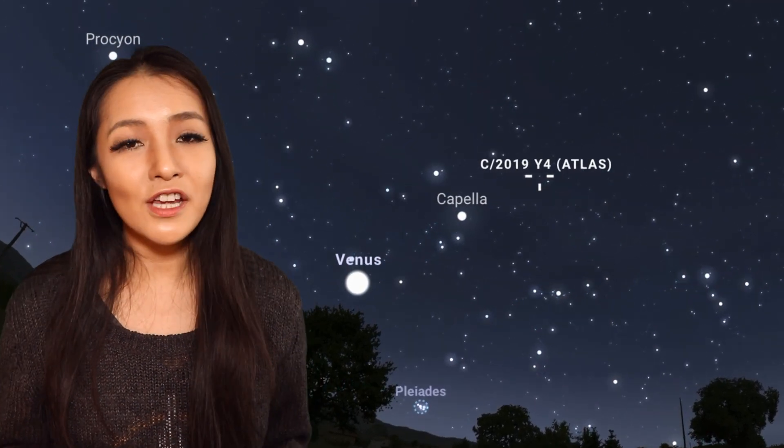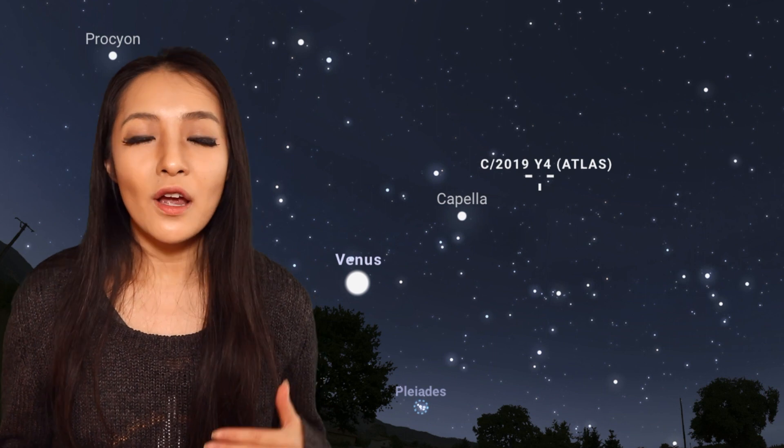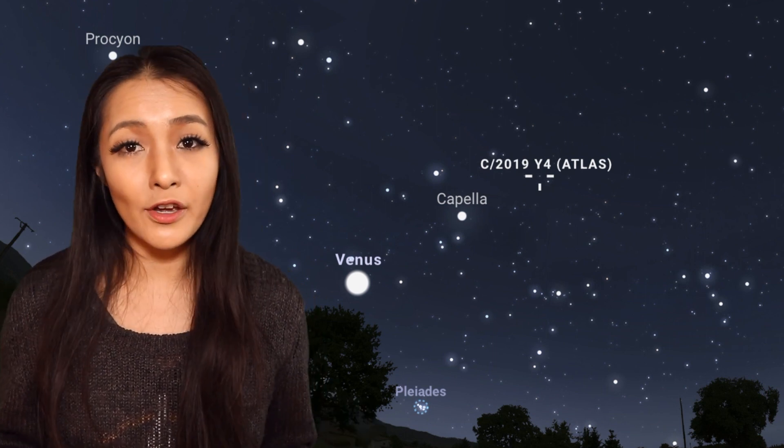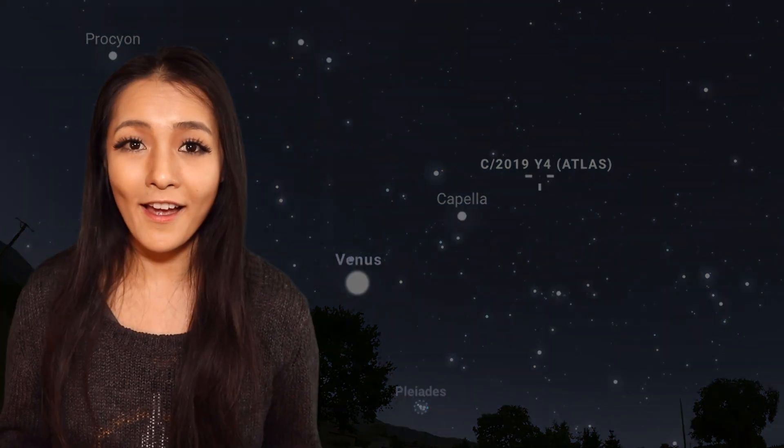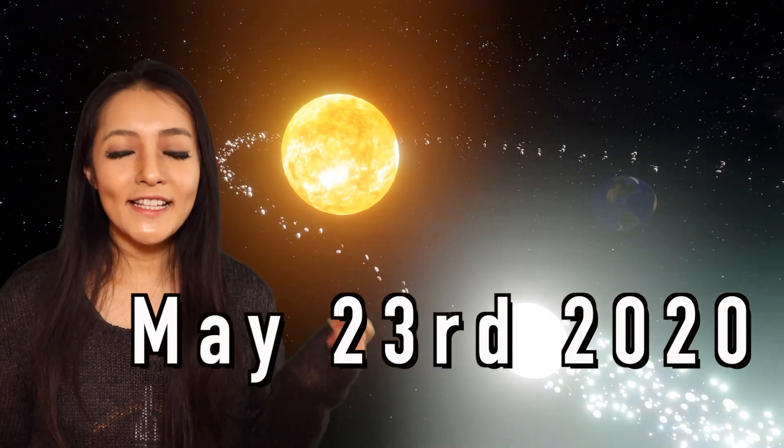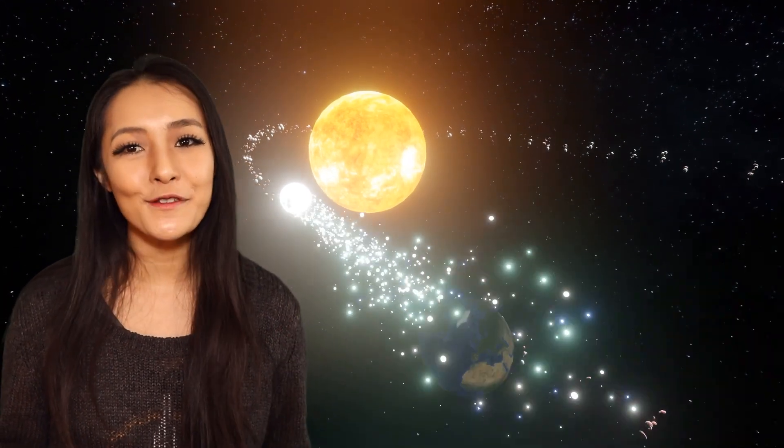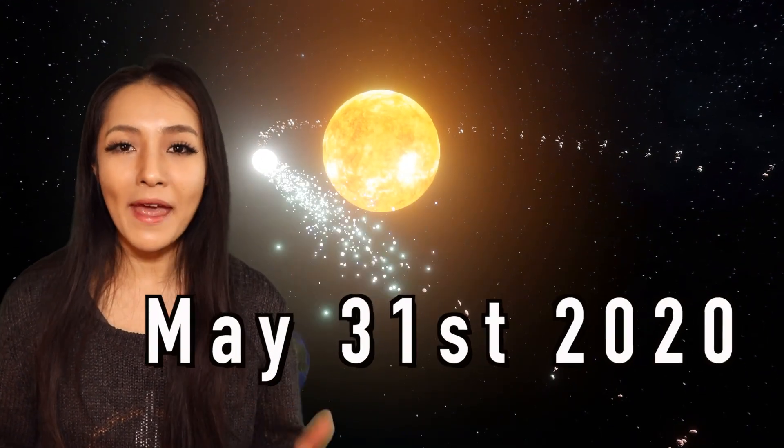Obviously, as a comet, its location will change very quickly. So I'll link down below the site where you can find it for people in other locations and at different times. On May 23rd, Atlas will get its closest approach to the Earth, and then it will pass very close to the Sun by around May 31st.